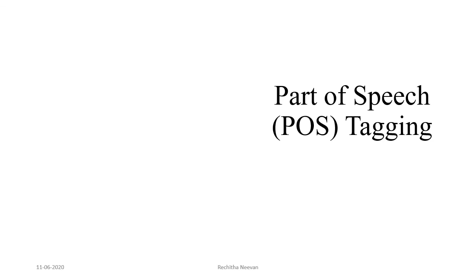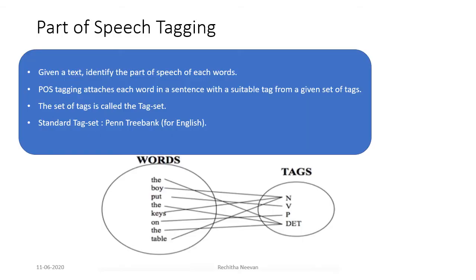Part-of-speech tagging is an important step in many NLP applications. Part-of-speech tagging identifies the correct part-of-speech for each word in a sentence. Some may define a set of tags, known as a tagset. In English, a common tagset system that we are using is Penn Treebank.